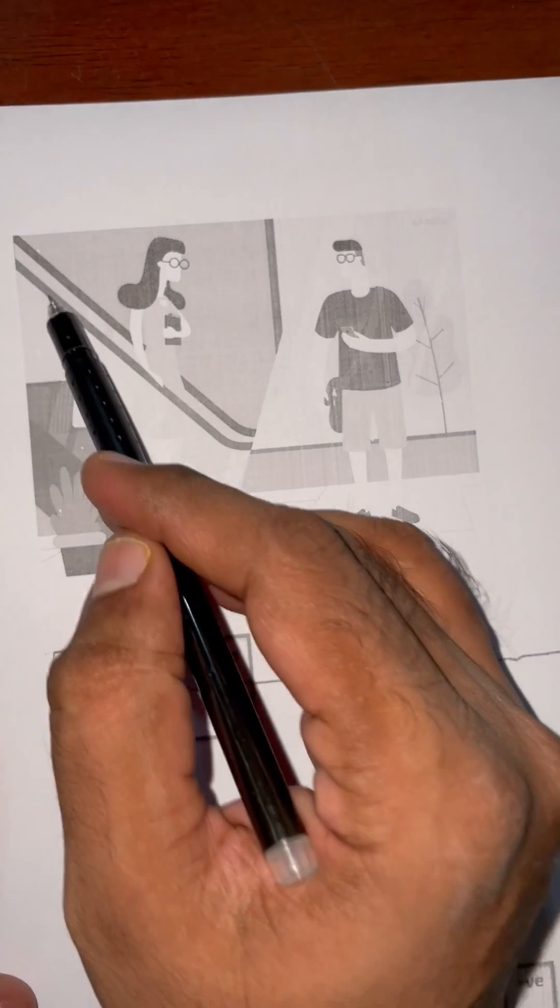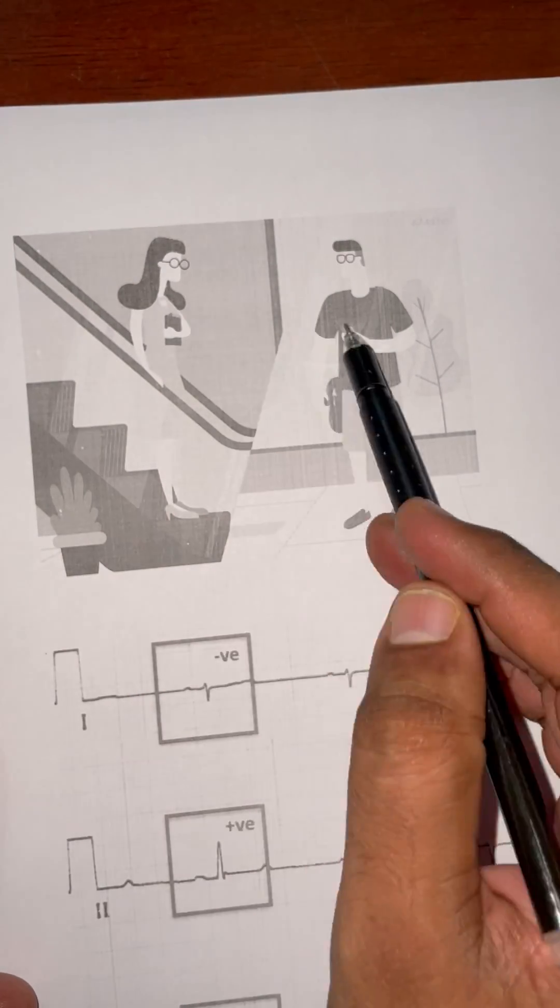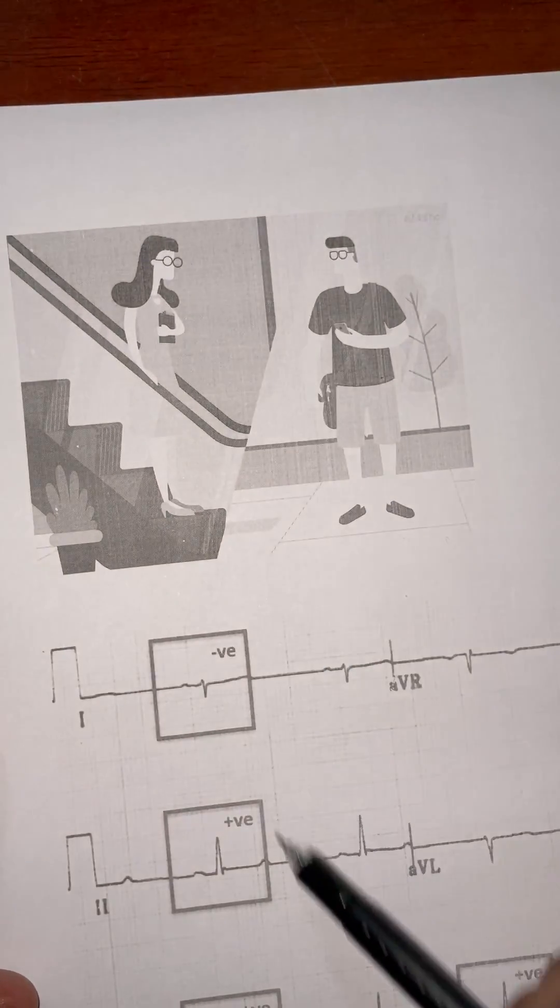The boy is going up, the girl is coming down, they both are towards each other, right towards each other, right axis deviation.